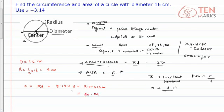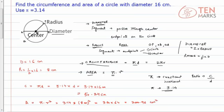So the circumference of this circle is 50.24 cm. The area is equal to pi times R squared, which is 3.14 times the square of the radius, or 8 cm squared. That gives us 3.14 times 64, which equals 200.96 cm squared.